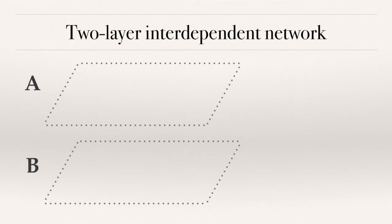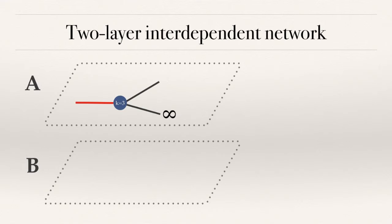Now let's look at a two-layer interdependent network. In this case, there are two layers, network A and B. Every node in A has an interdependent node in B, and when a node in A fails, its interdependent node in B fails as well. Let's say we randomly pick a link in network A, labeled in red, and it leads us to a node with degree k equal to 3, so it has two other links. One of them leads to the mutually connected giant cluster. Since it's a mutually connected giant cluster, it means this giant cluster in A is interdependently linked with the giant cluster in B.